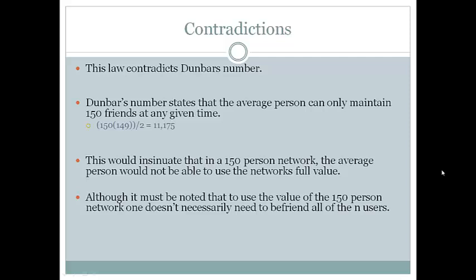Metcalfe's law contradicts Dunbar's number. Dunbar's number is a topic our team covered earlier in the semester. Dunbar's number states that the average person can only have, at most, 150 people in their network. Using Metcalfe's law, that grows to 11,175 connections.